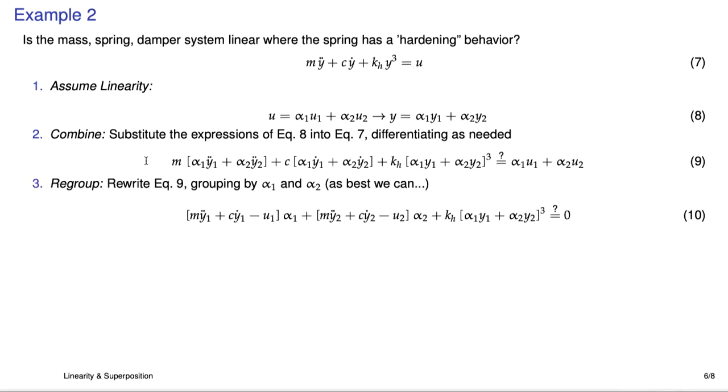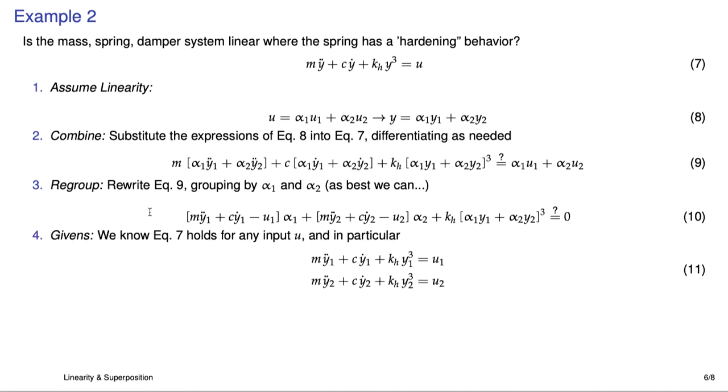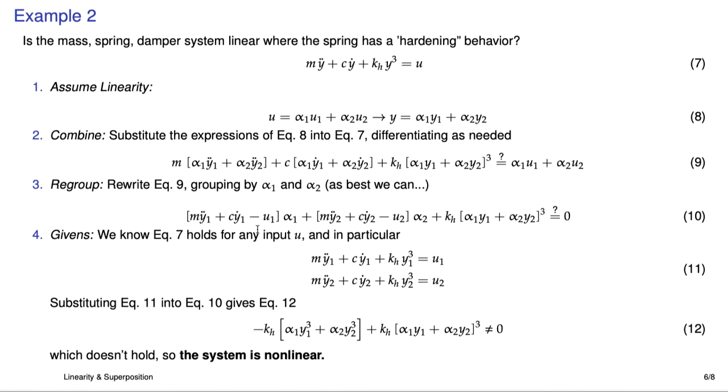So here we're going to regroup. We're going to try to expand that out and break out all the terms that are multiplied by alpha 1 and all the terms that are multiplied by alpha 2. The problem is this cubed expression has alpha 1 cubes and alpha 2 squareds and all sorts of strange things in it. So we're not even going to mess with that. We'll just leave it alone and do the best we can with the alpha 1, alpha 2 regrouping. And now we'll use our original differential equation of equation 7 with the specific u1 and u2 expressions as the inputs, and we get that. And now we could solve this equation for my1 double dot plus cy1 dot minus u1, and that goes into here. And do the same thing for this expression. And we get this.